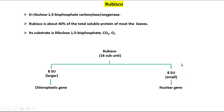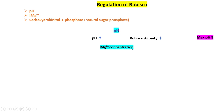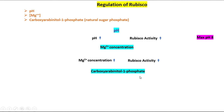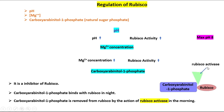Regulation of RuBisCO: RuBisCO is regulated by pH, magnesium ion concentration, and carboxyarabinitol-1-phosphate. As pH increases, RuBisCO activity increases. As magnesium ion concentration increases, RuBisCO activity increases. Carboxyarabinitol-1-phosphate is an inhibitor of RuBisCO. It binds with RuBisCO at night and is removed from RuBisCO by the action of RuBisCO activase in the morning.